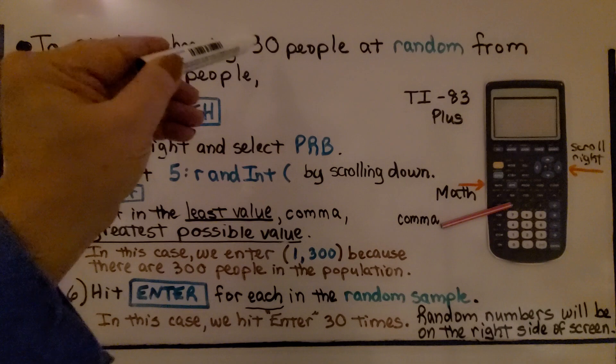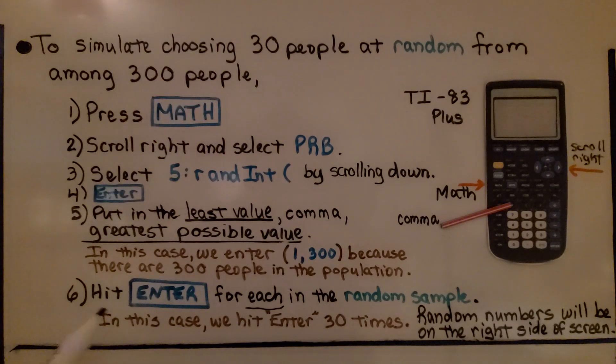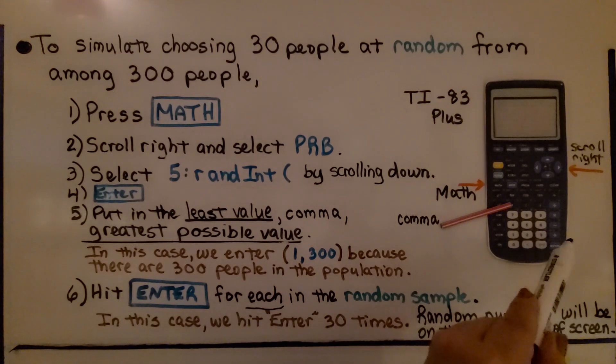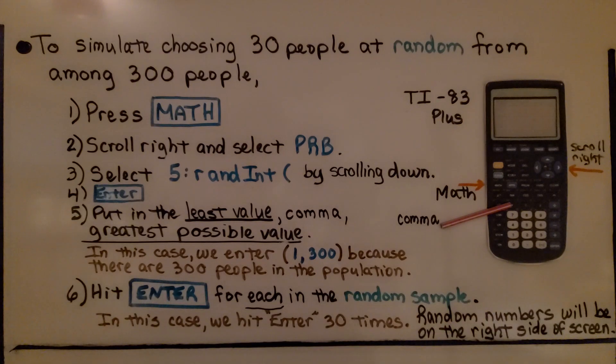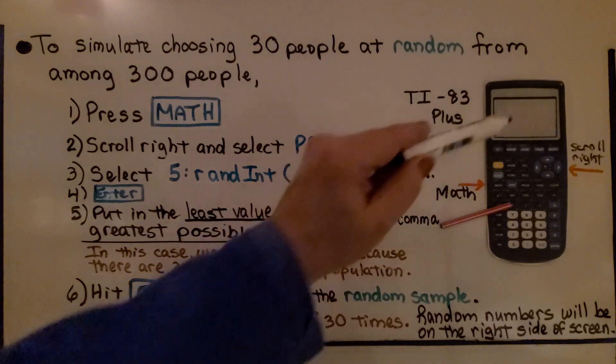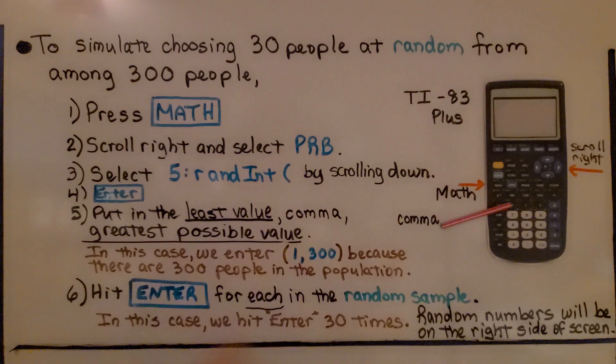Now remember, we're going to try to get 30 random numbers for 30 people. We hit Enter for each in the random sample. So in this case, we're going to hit Enter 30 times. We have to hit this for each random number we want. And the random numbers will appear on the right side of the screen over here.